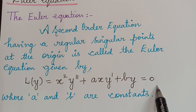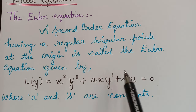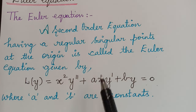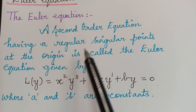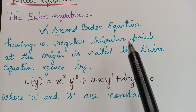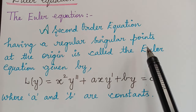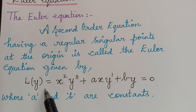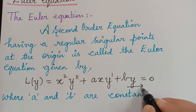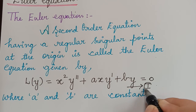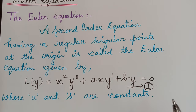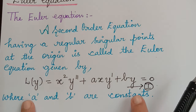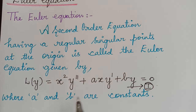Now we can understand that the regular singular point is at the origin. We have already seen the definition of singular points and regular singular points in our previous videos. We shall now find the solutions of this equation, which we mark as equation Roman numeral 1. To find the solutions, we consider two cases.